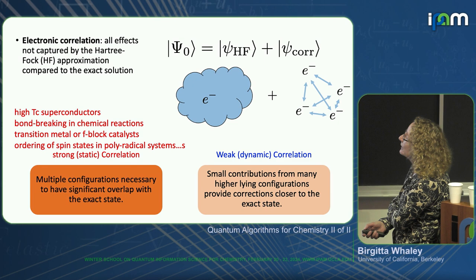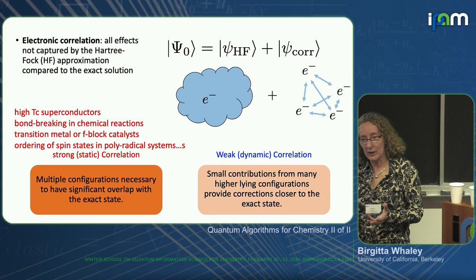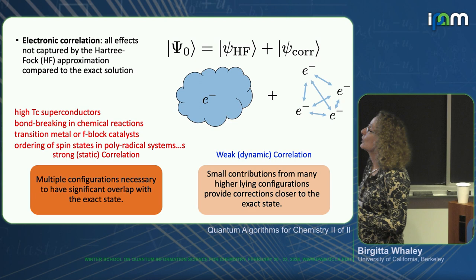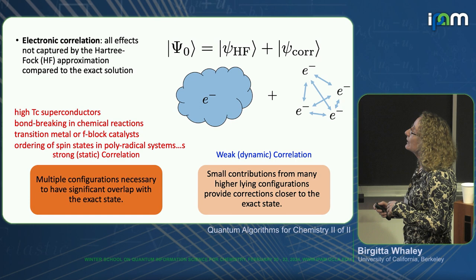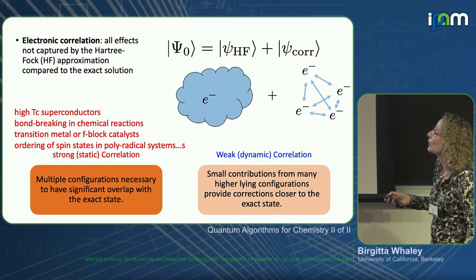In quantum chemistry, electronic correlation refers to everything that's not captured by Hartree-Fock. There is a kind of correlation already in Hartree-Fock — the quantum statistical correlation of the anti-symmetrization of the wave function — but that's an intrinsic quantum statistical correlation. There's also the mean field, which is an average type of correlation. Everything else is referred to as the electronic correlation.